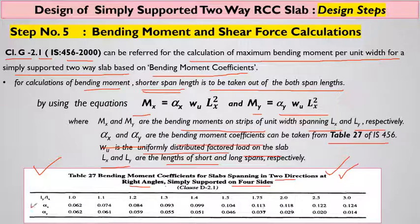To find αx and αy values, first calculate the Ly/Lx ratio. Based on this ratio (whether it is 1.0, 1.2, or in between), use interpolation if needed to find the values of αx and αy from the corresponding rows in the table.